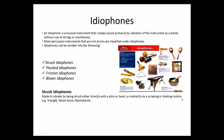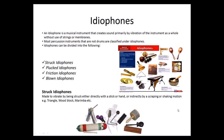The first one we look at is struck idiophones. They are made to vibrate by being struck either directly with a stick or a hand, or indirectly by a scraping or shaking motion. For example, the triangle, the wood block, and marimbas.